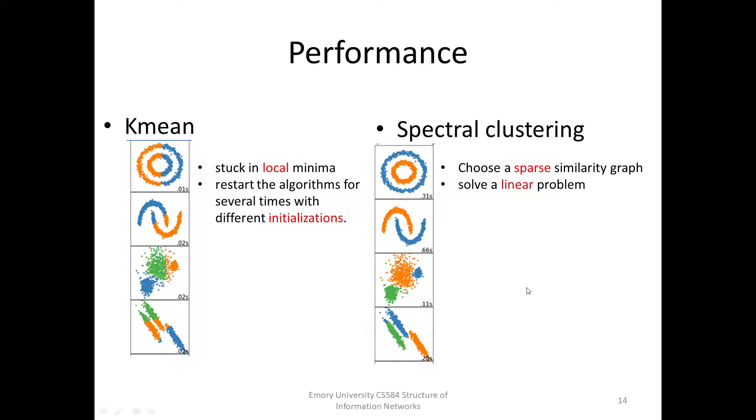The success of spectral clustering is mainly based on the fact that it does not make any assumptions on the form of the clusters. As opposed to k-means, where the resulting clusters are always convex sets, spectral clustering can solve very general problems like intertwined spirals. Moreover, spectral clustering can be implemented efficiently even for large data sets, as long as we make sure that the similarity graph is sparse.